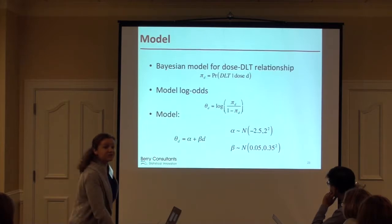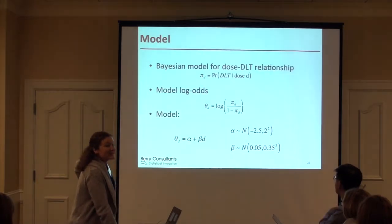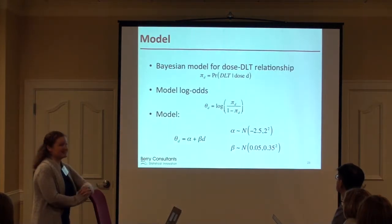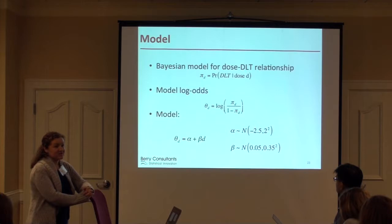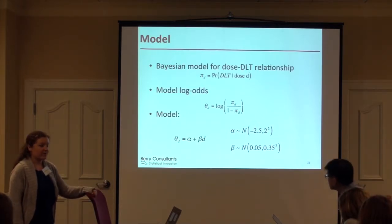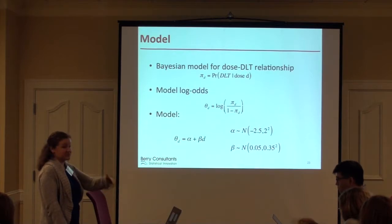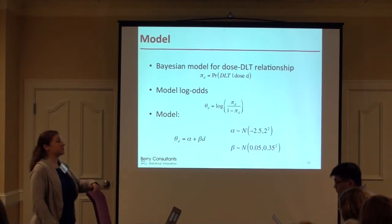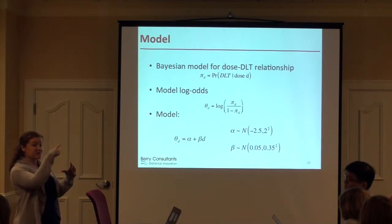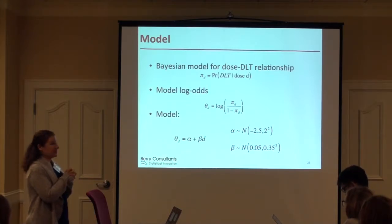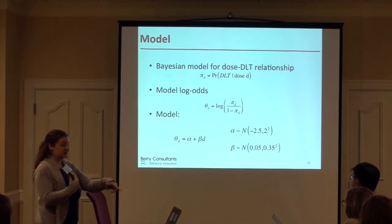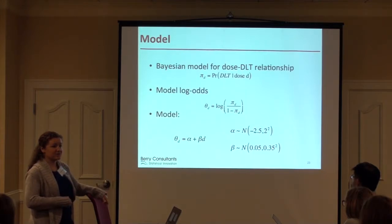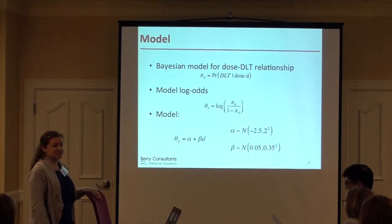How do you decide on the priors? That is an excellent question — it's an art as well as a science. There's a lot of calibration that needs to happen, and a lot of times we do that by running simulations. We'll look at example trials and examine the decisions they make, look at the operating characteristics — how often does it pick the right dose — and then decide if we need to tweak the priors. We often find there's a lot of iteration in that process.